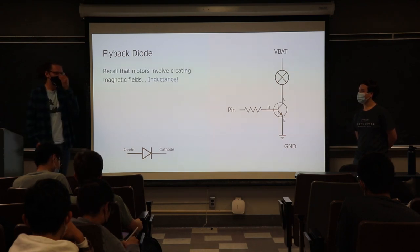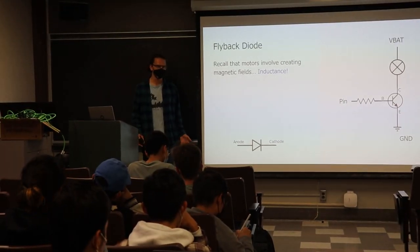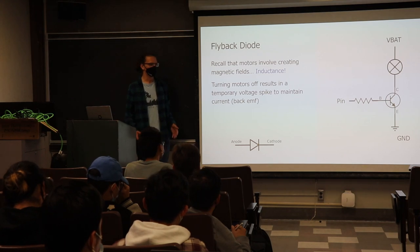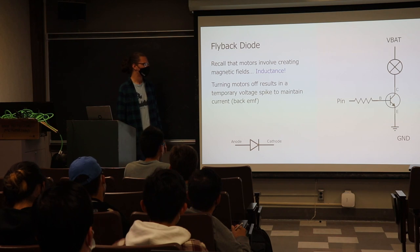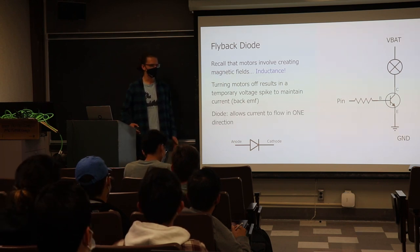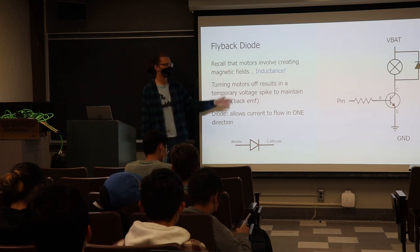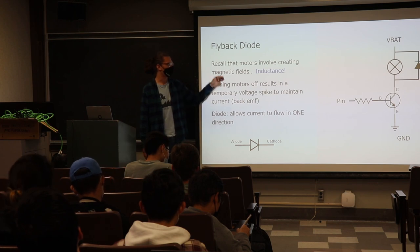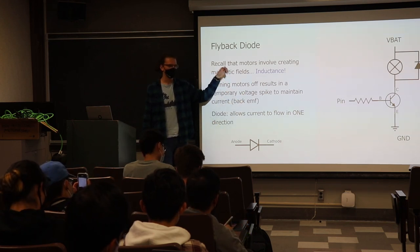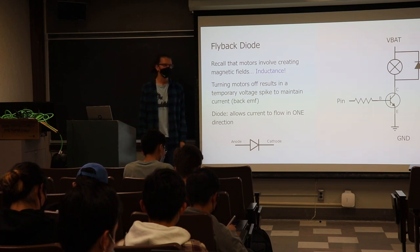That solves our voltage problem, but we still have a flyback diode issue. When motors are turning, they have electromagnets that create inductance. When you turn the motor off, you get a back EMF — a temporary voltage spike — that could fry the transistor. So we need a diode that allows current to flow in one direction. Placed correctly, when we turn the motor off and get that voltage spike, current flows back up to the battery rather than down through and destroying the transistor.